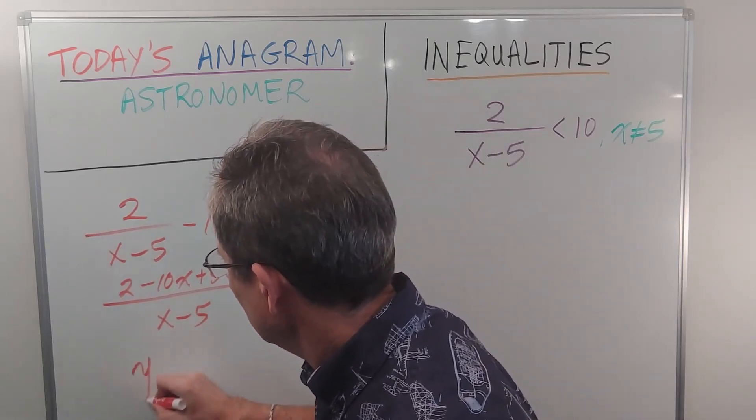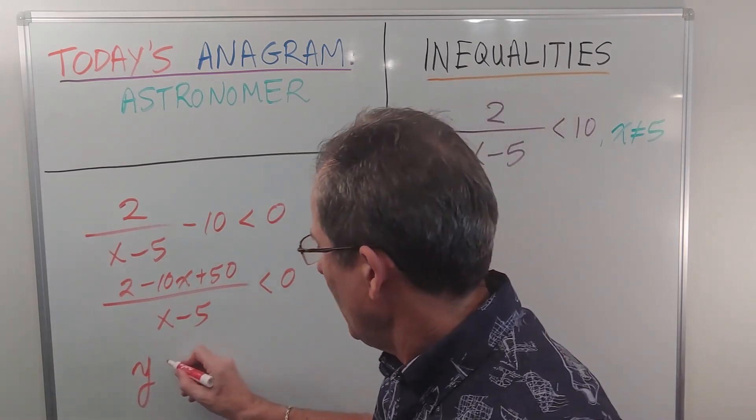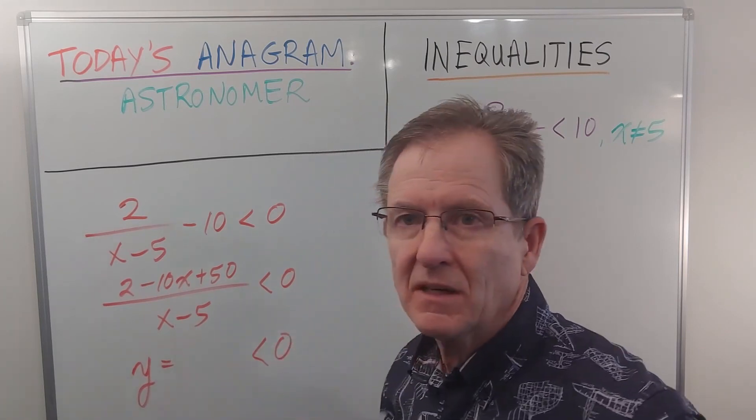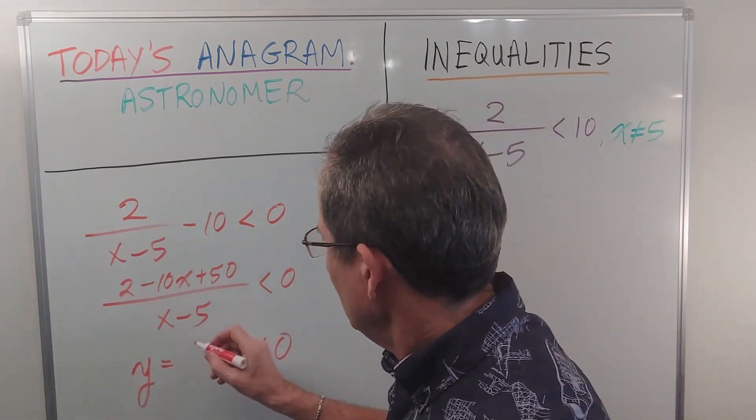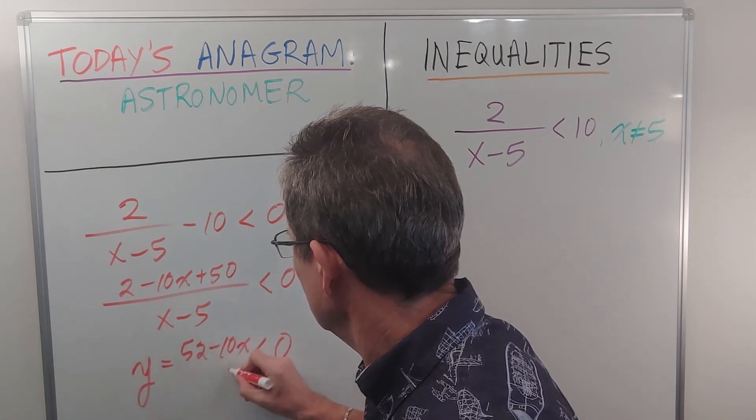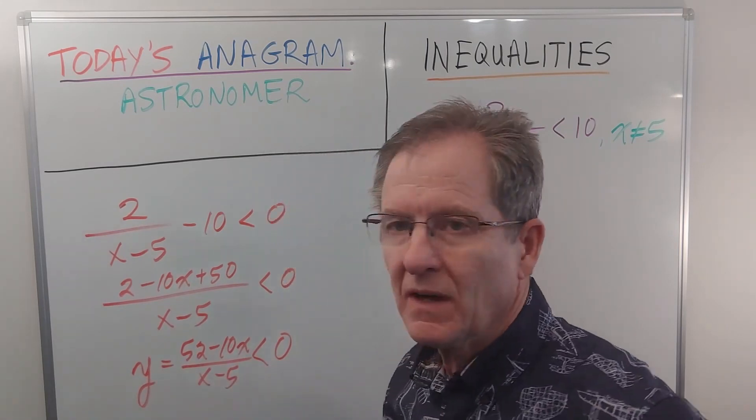Now let's consider the corresponding function y equals that has to be less than zero. And that reduces to 52 minus 10x, or simplifies to that over x minus 5.